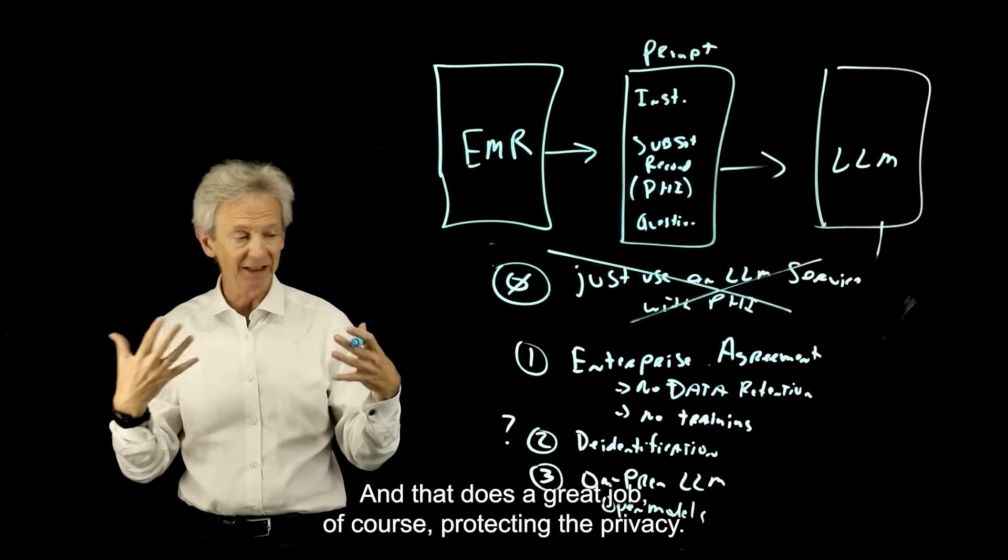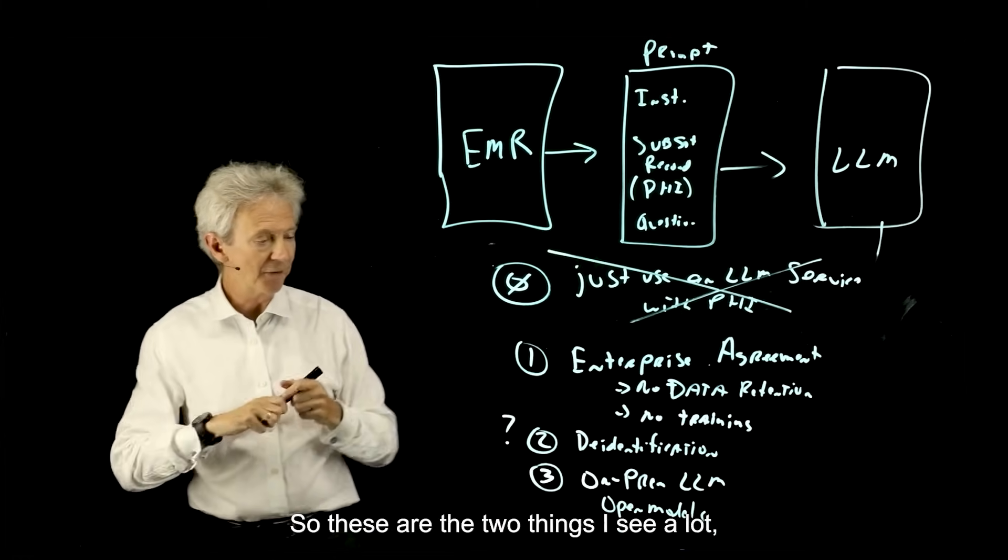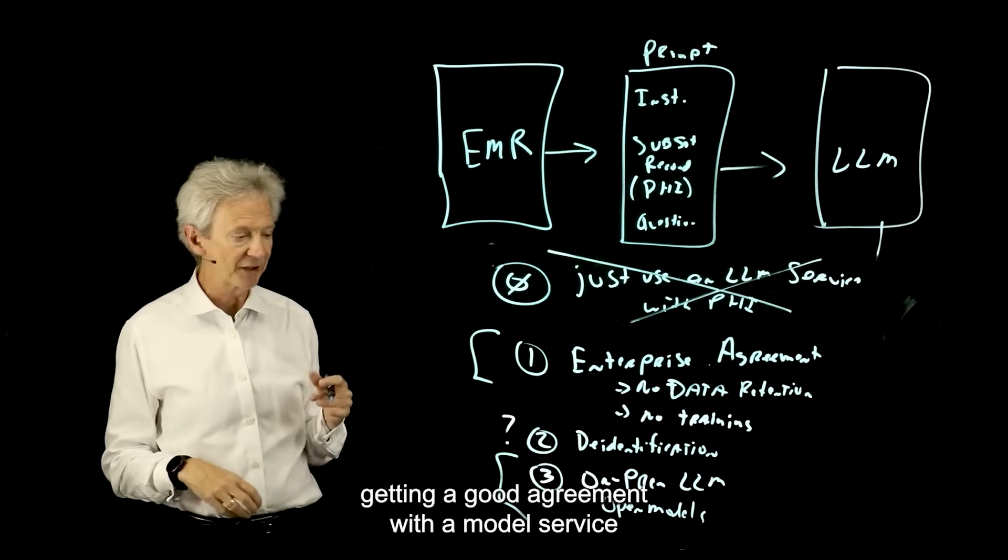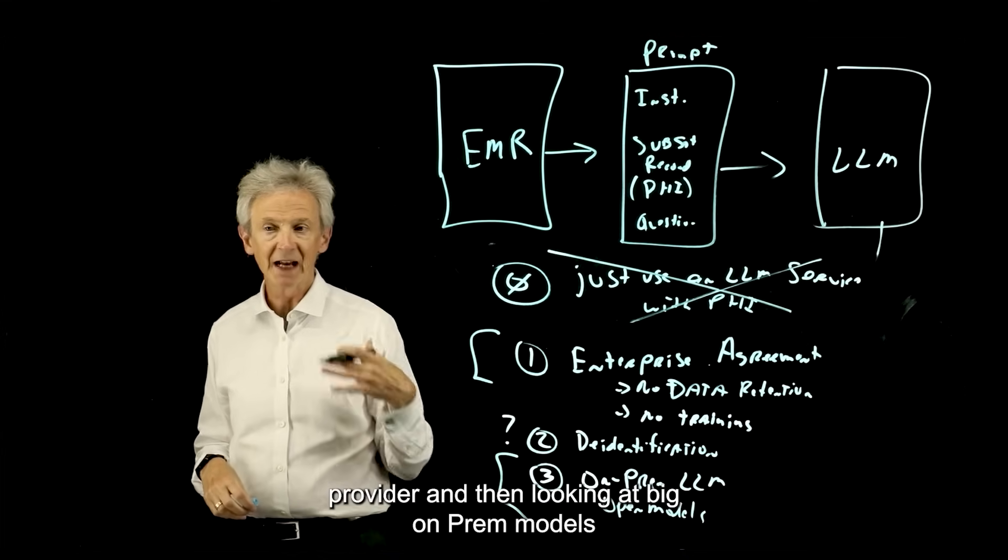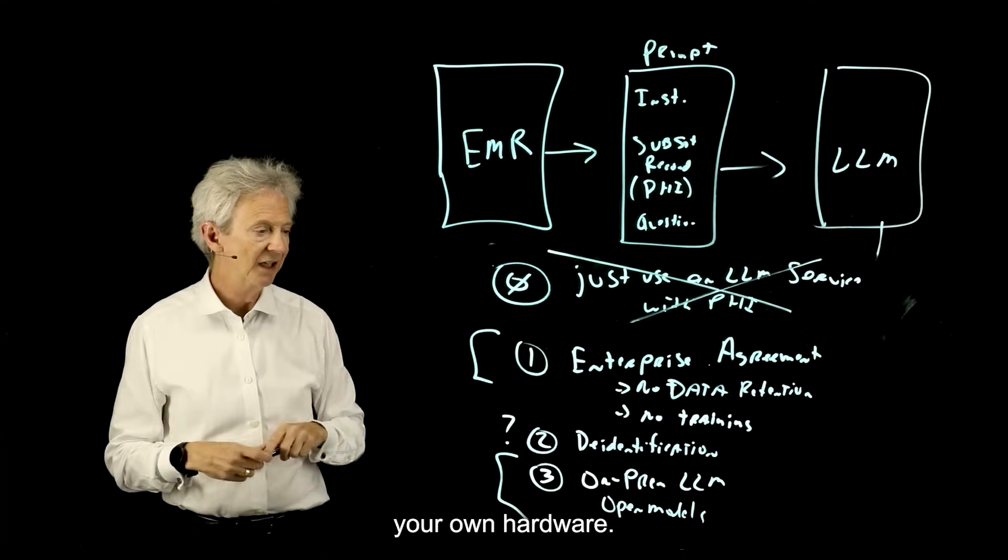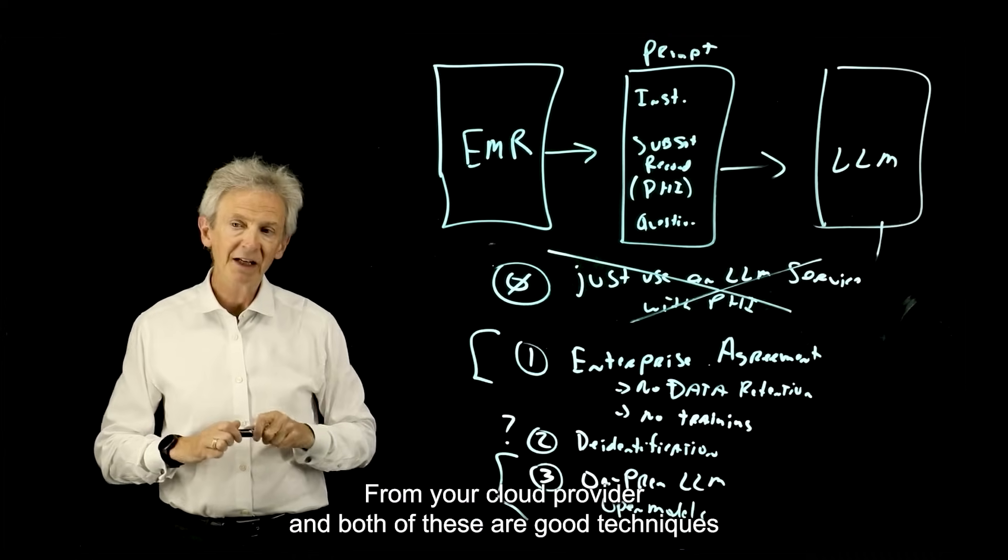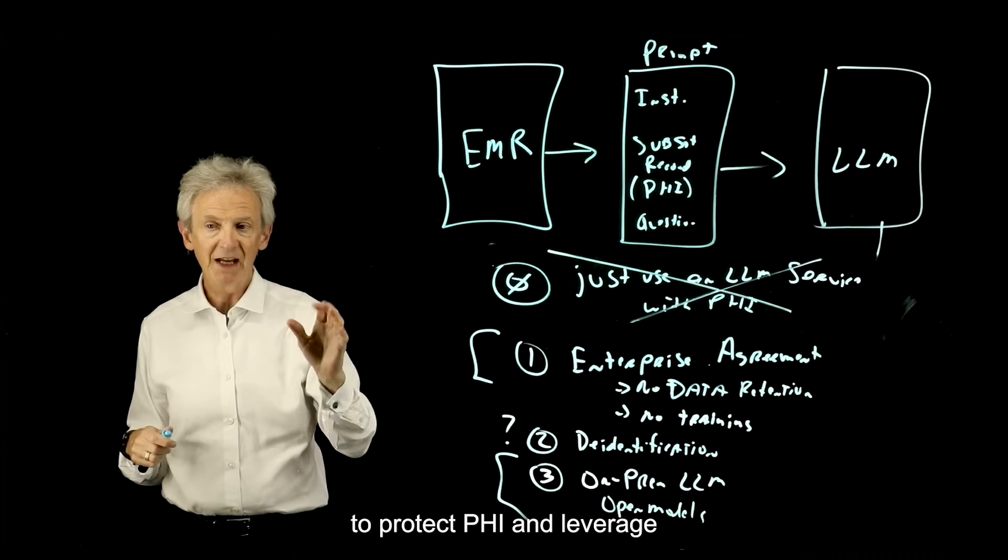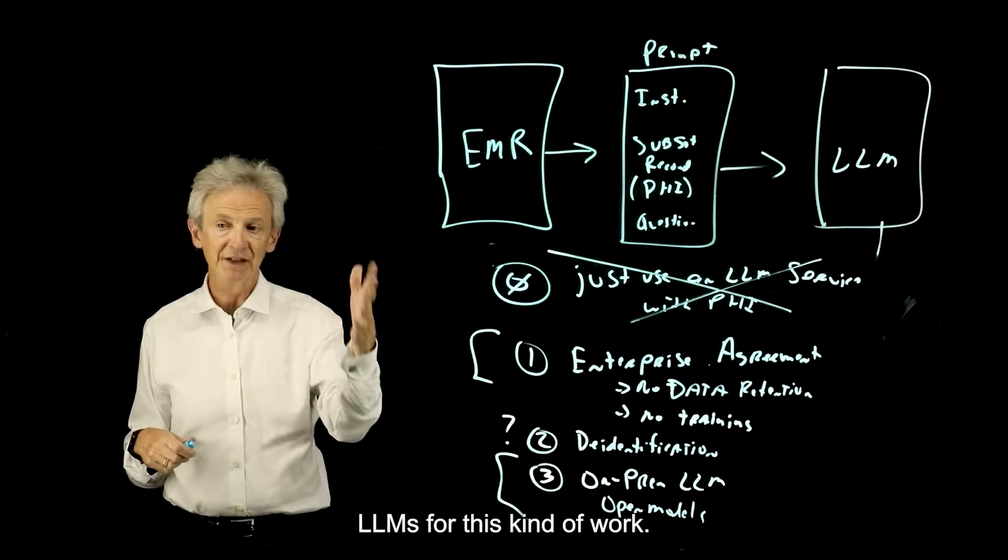So I think there will be a role for on-prem LLMs as well. And that does a great job, of course, protecting the privacy. So these are the two things I see a lot. Getting a good agreement with a model service provider, and then looking at big on-prem models and buying your own hardware or provisioning your own hardware from your cloud provider. And both of these are good techniques to protect PHI and leverage LLMs for this kind of work.